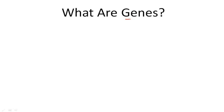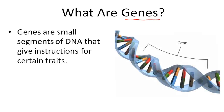You've probably heard the term genes before. You get your genes from your parents, things like that. But what are they? Genes are small segments of DNA that give instructions for certain traits. So this segment here might be for your hair color, and this next segment might be for your hair texture.